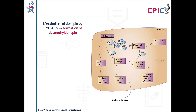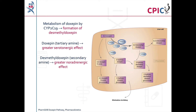Doxepine is metabolized by CYP2C19 to desmethyldoxepine, which is an active metabolite. Doxepine is a tertiary amine with a greater serotonergic effect, while desmethyldoxepine is a secondary amine with a greater noradrenergic effect.